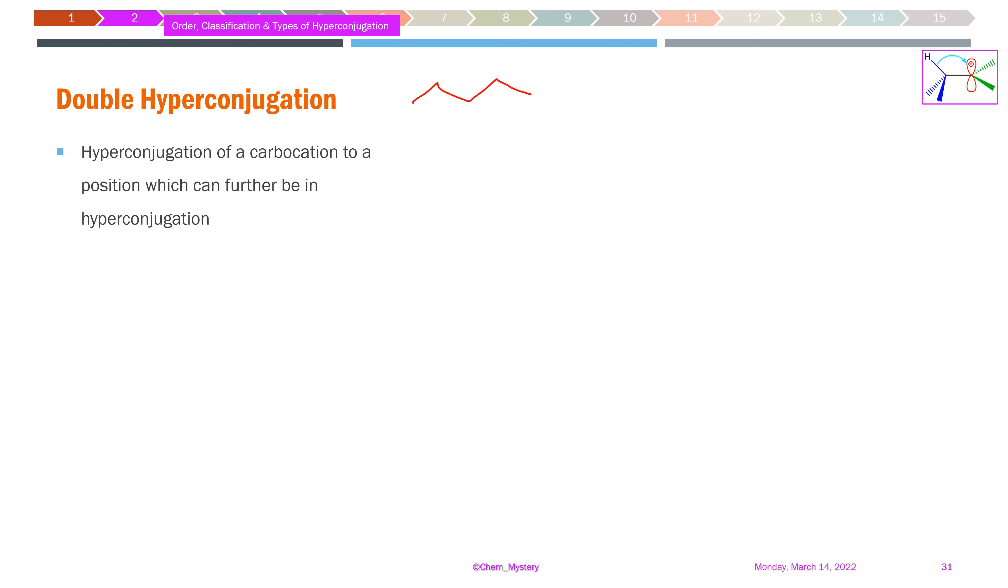For example, if we have a molecule with multiple conjugated double bonds, when writing the resonating structure, one bond moves, then another bond moves, and simultaneously another bond also moves.